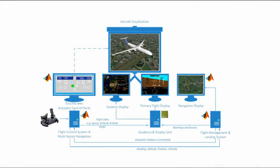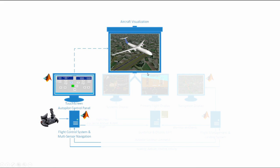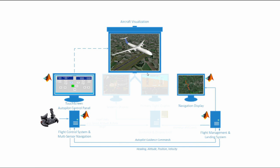This system was implemented using three computers. The first is the flight control computer with a FlightGear interconnection, MATLAB GUI, autopilot, and joystick input. The second is the flight management and landing system computer, which provides guidance to the flight control system, and for this demonstration displays the trajectory of the aircraft in real-time.